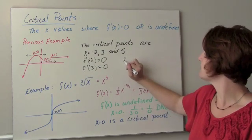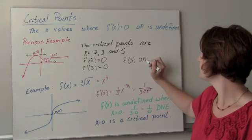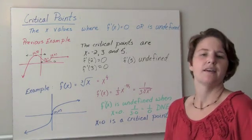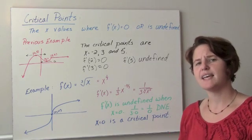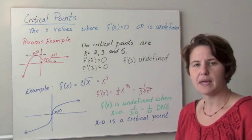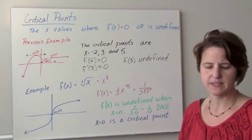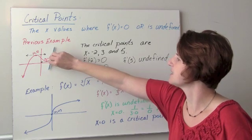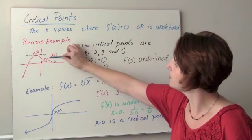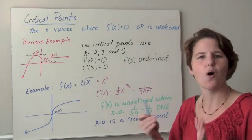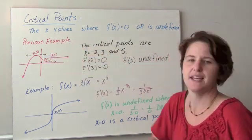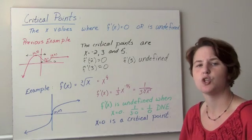The derivative does not exist when x equals 5 because we have a sharp corner. Remember the definition of derivative — the limit definition says we take the limit as delta x goes to 0 of the different slopes. Coming in from the left side, I have positive slopes. But coming in from the right side, the slopes are all 0. A positive number and 0 are not close to each other — this is a very sharp change in our two slopes, and so that limit did not exist, and we say that the derivative is undefined.